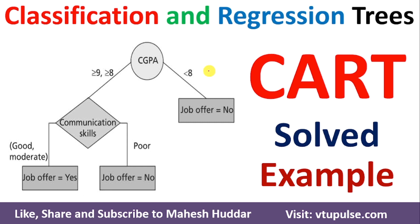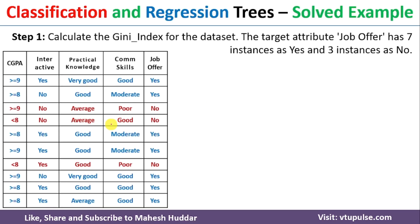Welcome back. In this video, I will discuss how to build a decision tree using Classification and Regression Trees — that is nothing but the CART algorithm — with the help of a simple solved example. We have been given a dataset with four attributes and 10 examples. Given this particular dataset, we need to apply the CART algorithm and build the decision tree.